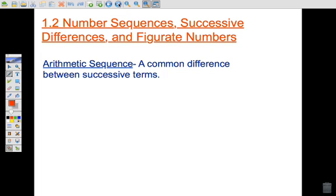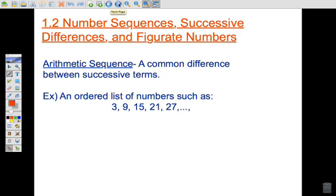An arithmetic sequence is a common difference between successive terms. This is your most common pattern, number pattern type of idea. If we are given an ordered list of numbers, such as 3, 9, 15, 21, 27, and maybe we want to predict the next number or the next few numbers, we need to look for a pattern.